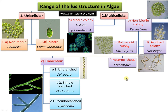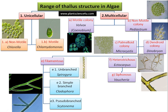The next is siphonous algae, as in the case of Vaucheria, where there is no septation — a tube-like structure without septation. It is multi-nucleate, with many nuclei in a common protoplasm. This condition is also called a siphonous or coenocytic condition.